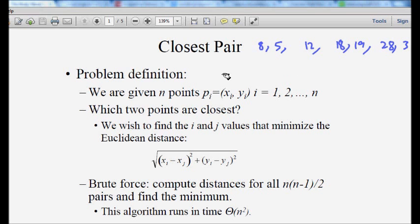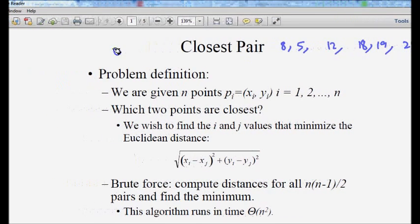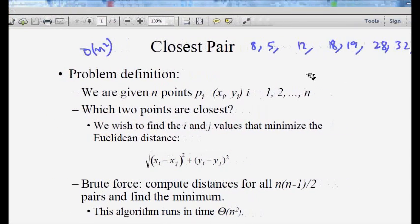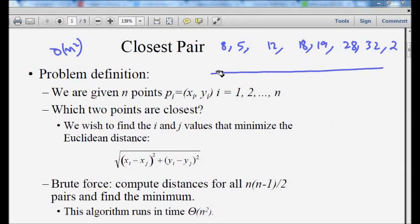The easiest way, again the brute force, will be the same O(n²). But in a single dimension what you can do is sort the points. 2 is the first one, then you have 5, then 8, 12, 18, 19, 28, and 32. So we have sorted.